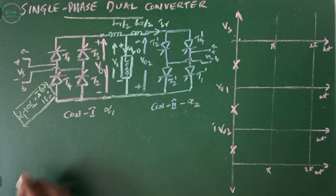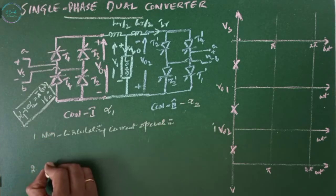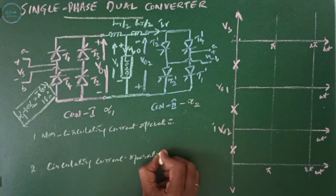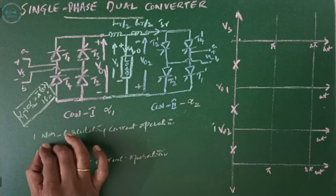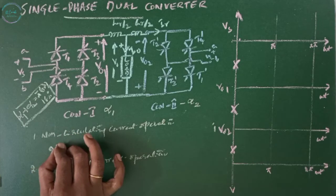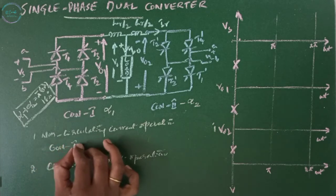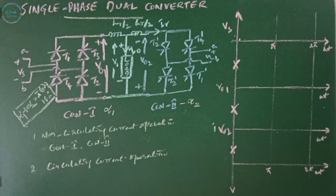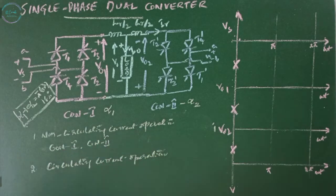There are two types of operations for a dual converter: non-circulating current operation and circulating current operation. In non-circulating current operation, at any instant of time only one converter is in operation. If converter one is in operation then converter two is in rest mode, and when converter two is in operation converter one is in rest mode. The switching from converter one to converter two is done by removing the firing signals to the respective converter. Here there is no problem of circulating current.